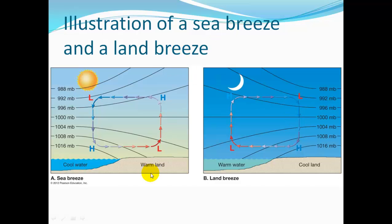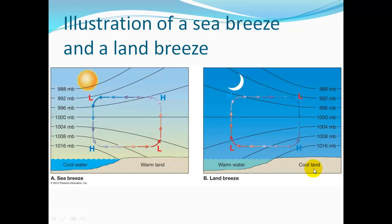Sea breeze and land breeze: with warm land and cool water, air rises up from the land and heads out to sea. As it subsides over the ocean, it comes back onto the land as a sea breeze — so the breeze flows from water to land. At night, when it cools over the land, the breeze switches direction, going from the land out to the water as a land breeze.